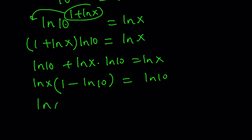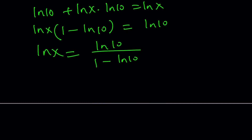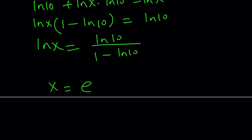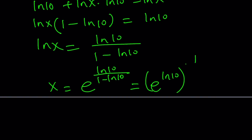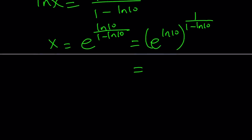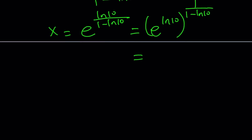And from here we arrive at the same result — it's just a different path but we end up with the same thing. Then if you do e to the power of both sides, that's going to be e to the power ln 10 over 1 minus ln 10. Again, like before, you can write it as e to the power ln 10, to the power 1 over 1 minus ln 10, which simplifies to 10 to the power 1 over 1 minus ln 10.